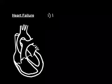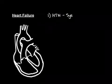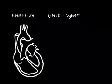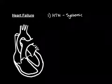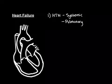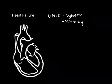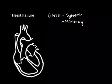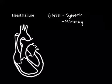Let's begin with hypertension. I'm abbreviating hypertension down to HTN. There are two main forms of hypertension: systemic hypertension, which is by far the most common, and the much rarer pulmonary hypertension. Systemic hypertension is often an idiopathic phenomenon — to give it its full name, it's called essential hypertension.